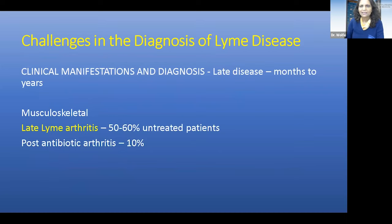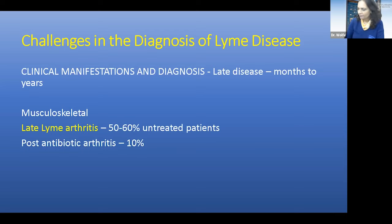Late disease can happen months to years after the initial infection. About 50 to 60% of people with untreated Lyme disease will go on to develop late Lyme arthritis. Of those who are treated, about 10% will have persistent arthritic symptoms despite one or two courses of antibiotic therapy. This is one of the primary reasons we treat Lyme disease — to prevent this from happening.